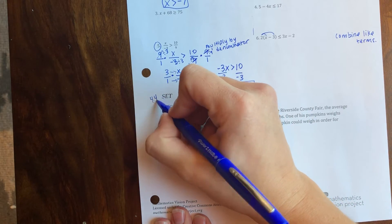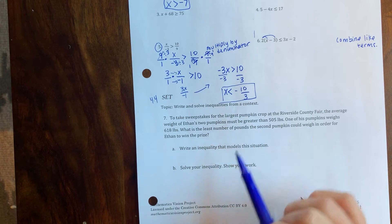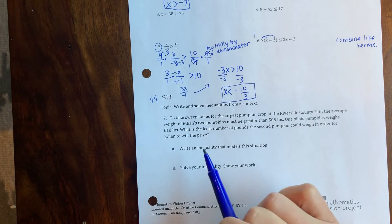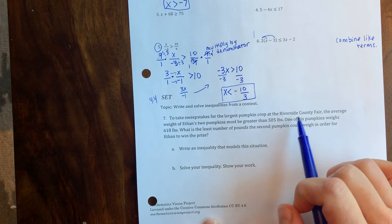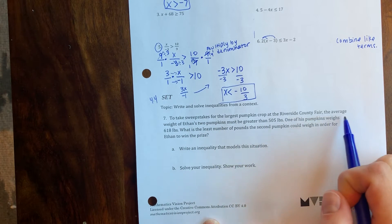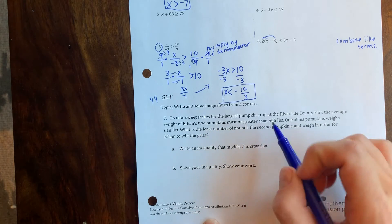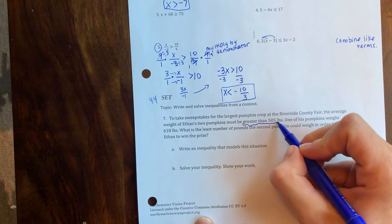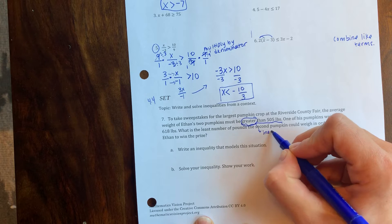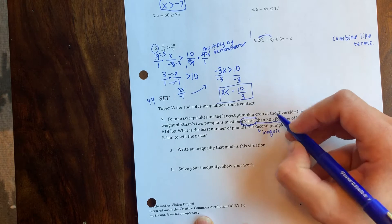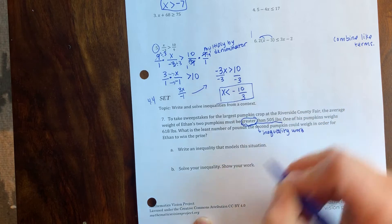This is a 4.4 set section where we're adding words to our inequalities. I'll do problem seven: sweepstakes for the largest pumpkin crop at the Riverside County Fair. The average weight of Ethan's two pumpkins must be greater than 505 pounds. That 'greater' is an inequality word that's gonna tell me which way my inequality faces.